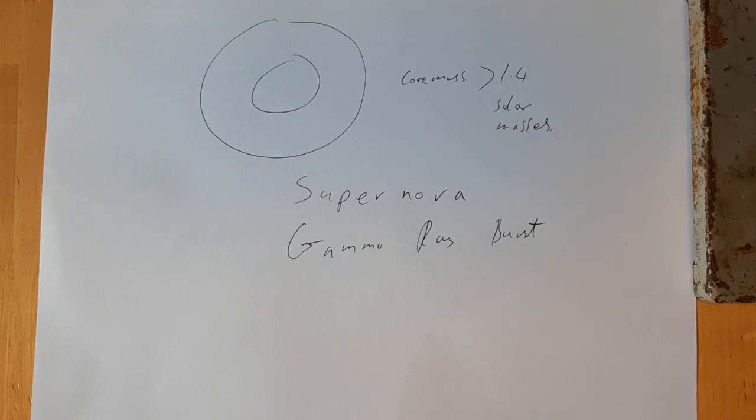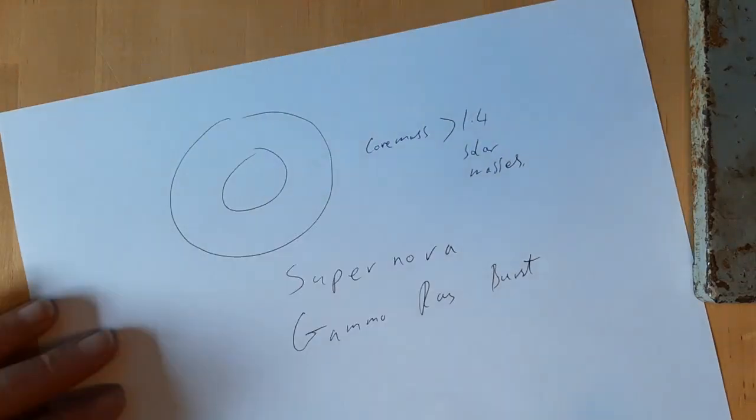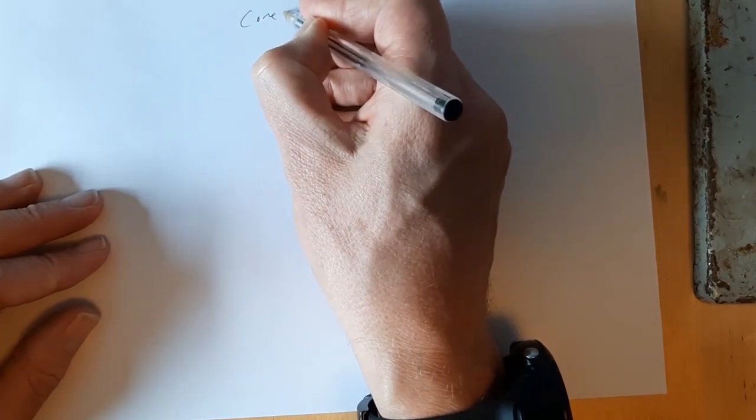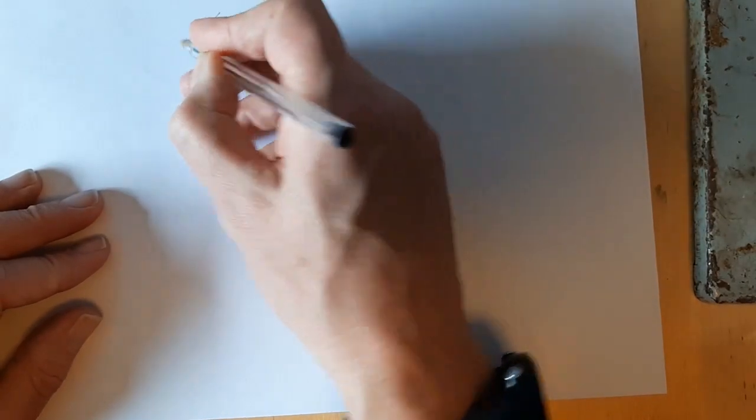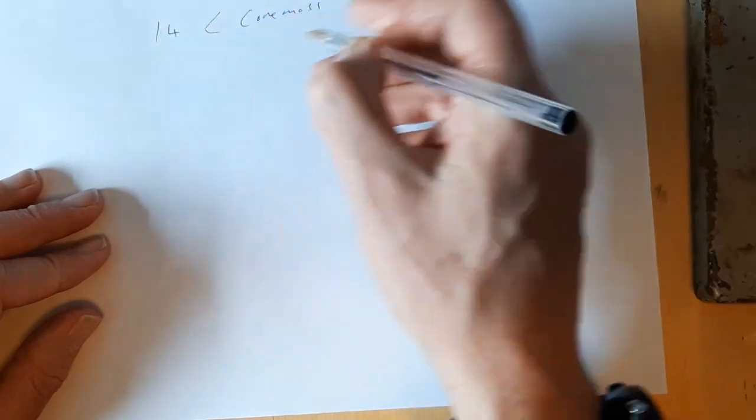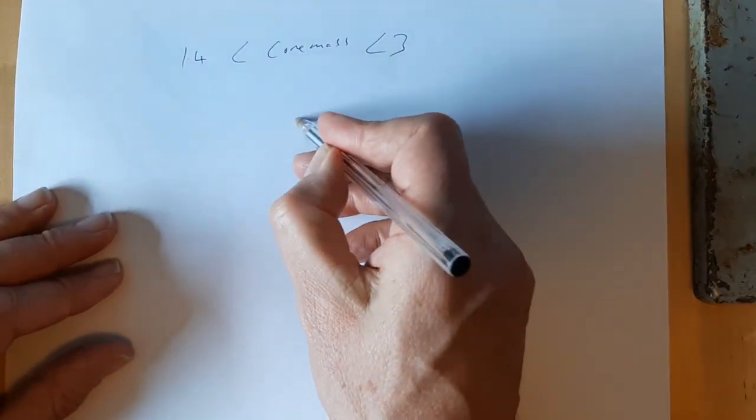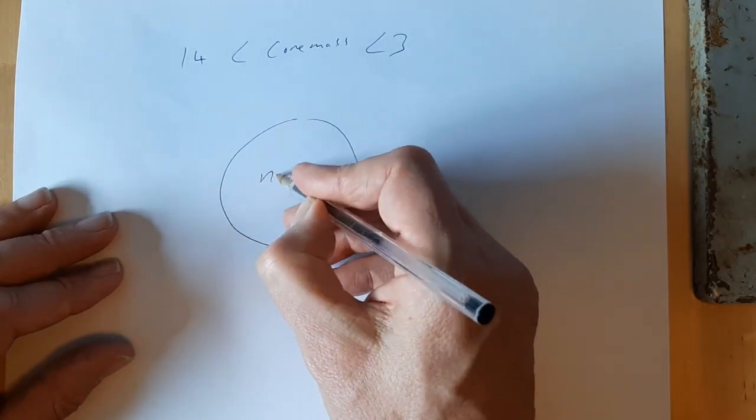So what do we get left afterwards after we've had a supernova explosion? Well there are two possible outcomes: we could have a neutron star or we could have a black hole. If the core mass is greater than 1.4 solar masses but less than 3, then the resulting object formed is a neutron star.